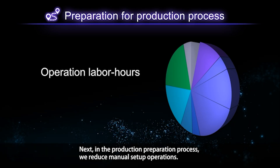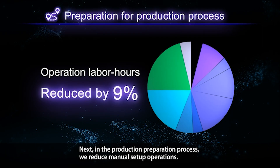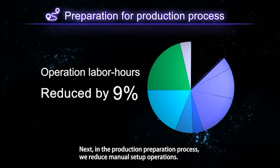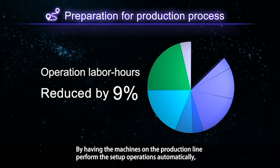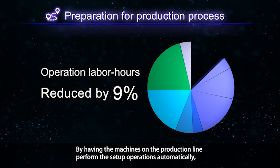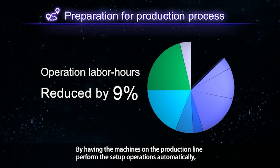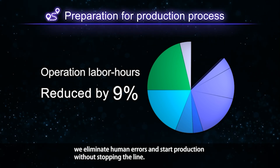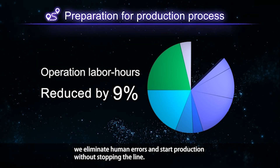Next, in the production preparation process, we reduce manual setup operations. By having the machines on the production line perform the setup operations automatically, we eliminate human errors and start production without stopping the line.